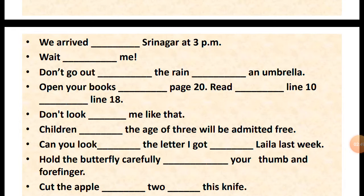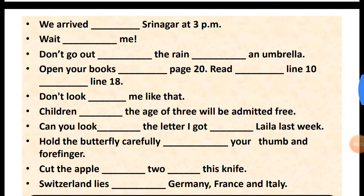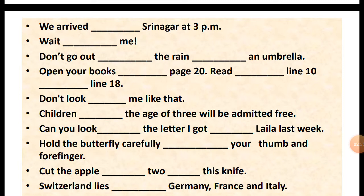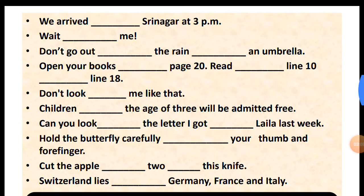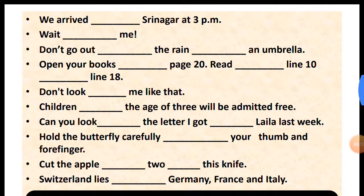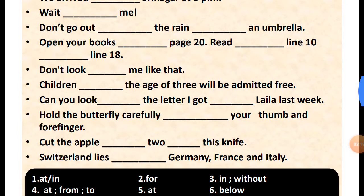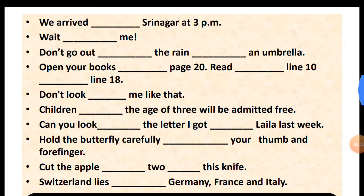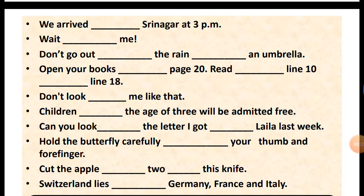Wait for me. Accordingly, don't go out in the rain without an umbrella. Open your books at page 20. Read from line 10 to line 18.